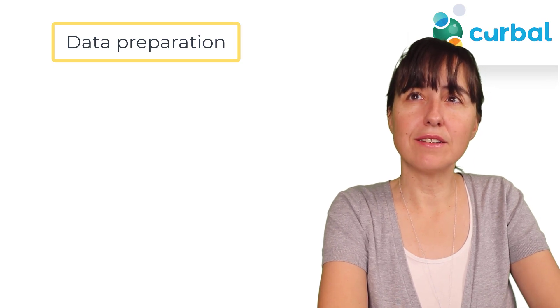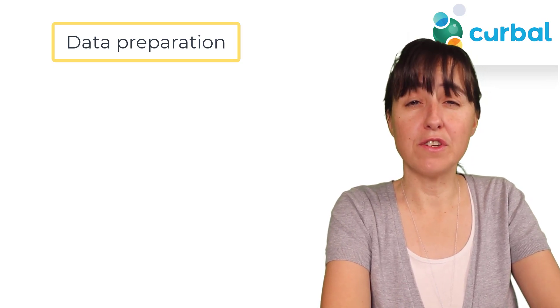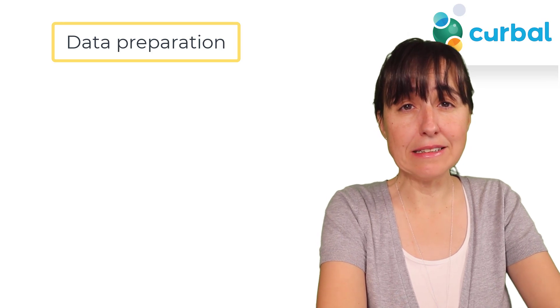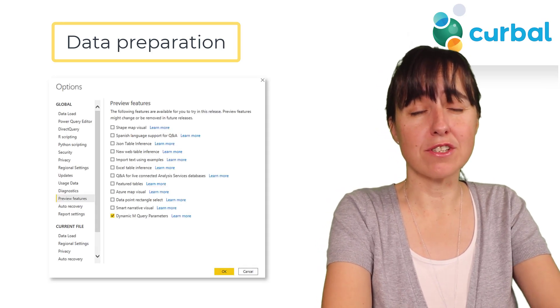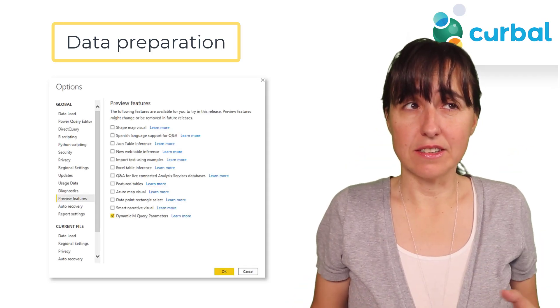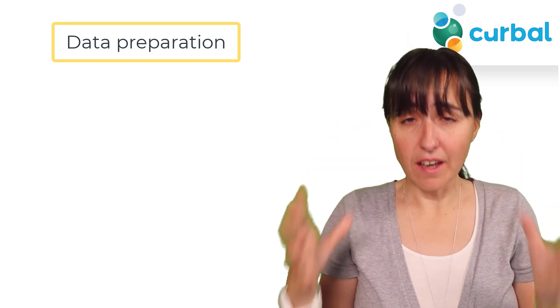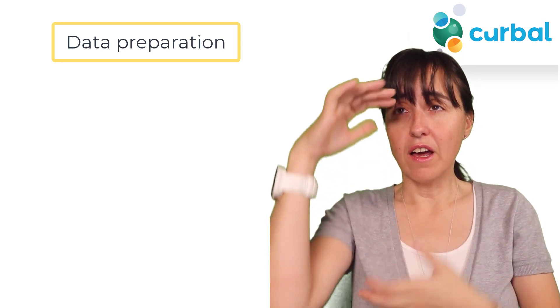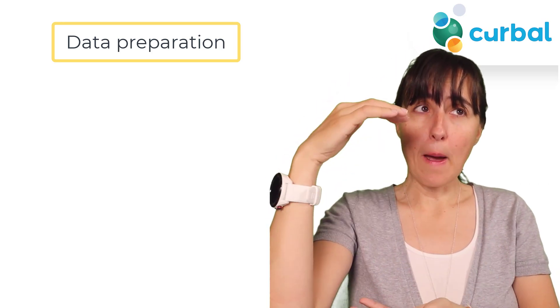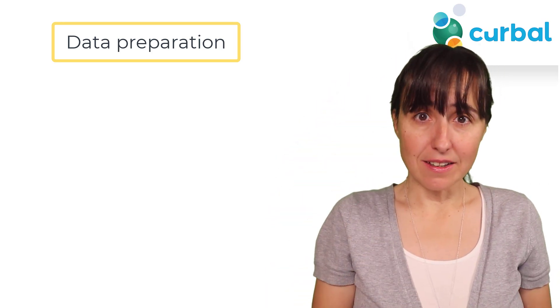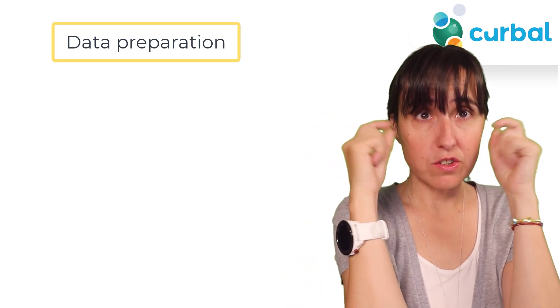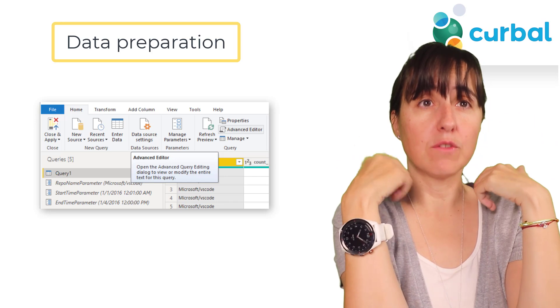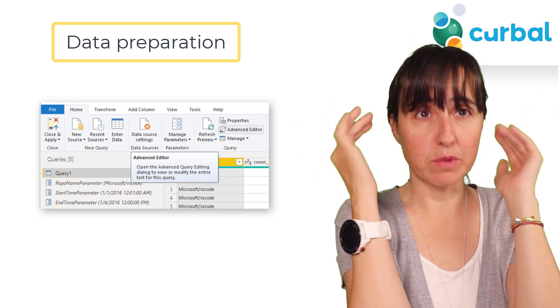When it comes to data preparation, this is my favorite feature for the October update: dynamic M query parameters. If you have big tables you're probably using Direct Query, and you're probably also trying to minimize how much data gets queried.